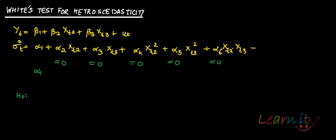So your null hypothesis is, of homoscedasticity, you will assume that Alpha2 to Alpha3 to Alpha4 and Alpha5 to Alpha6, all of them, they are equal to 0.